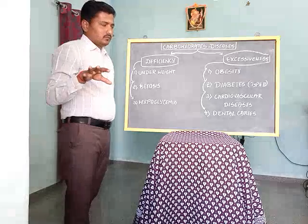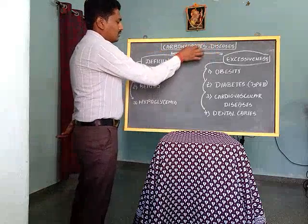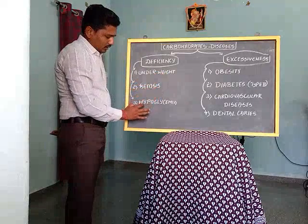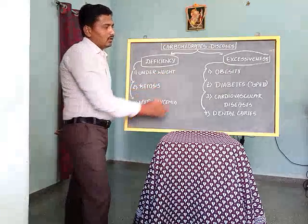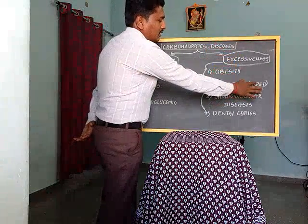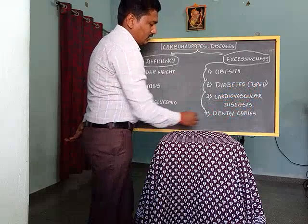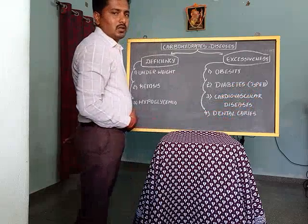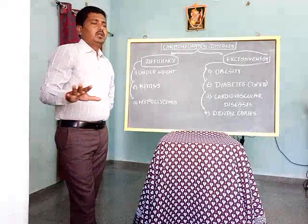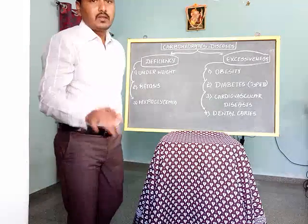To conclude: deficiency of carbohydrate leads to underweight, ketosis, and hypoglycemia. Excessiveness of carbohydrate leads to obesity, diabetes mellitus (especially type 2), cardiovascular diseases, and dental caries. With this we complete today's class. In the upcoming class we will look in detail at lipids. Thank you.